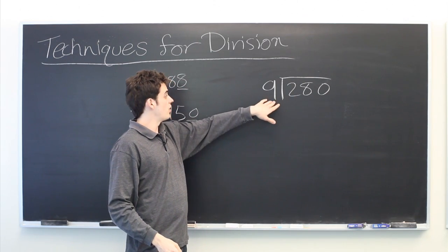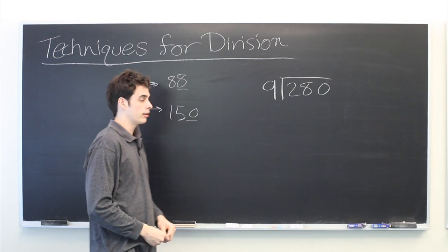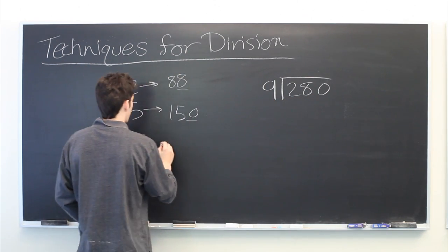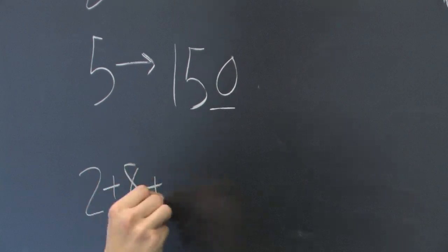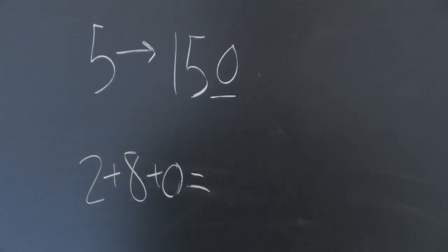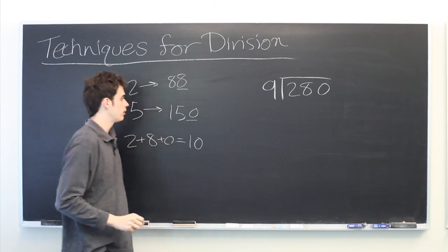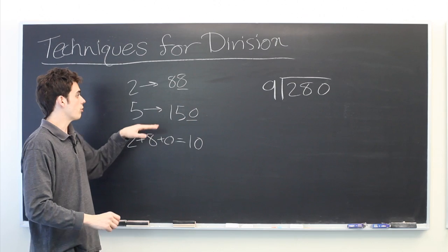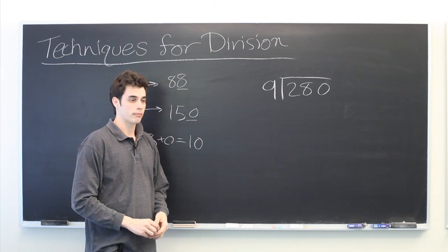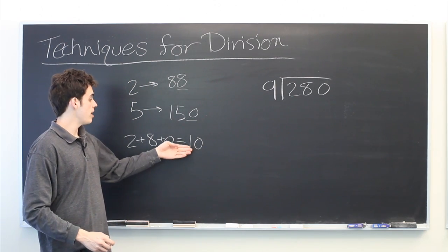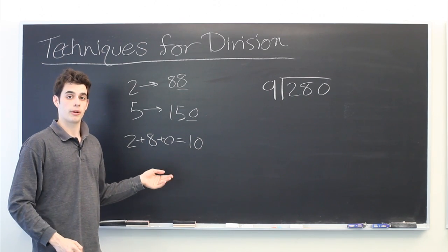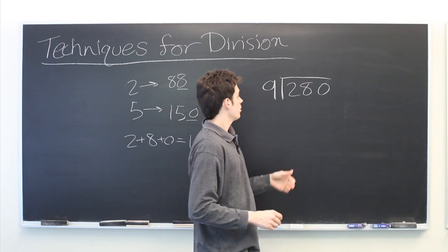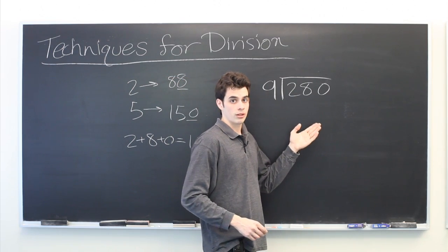And in this case, the divisibility rule for 9 is, if you add up all of the digits individually, 2 plus 8 plus 0, in this case we get 10. If that number is divisible by 9, then the original number is divisible by 9. In this case, it's not. And in fact, you can repeat this process iteratively until you get a small enough answer that you can evaluate it just by inspection. So here, we're going to have to do long division and we'll get a remainder.